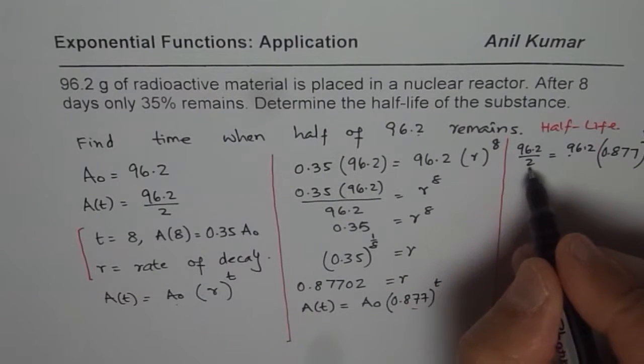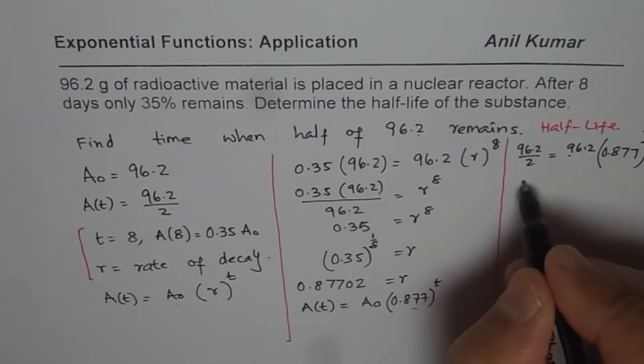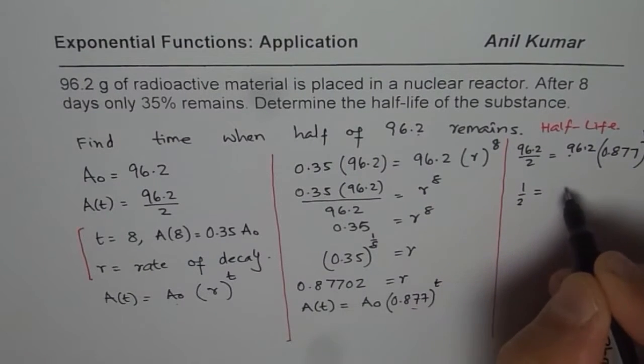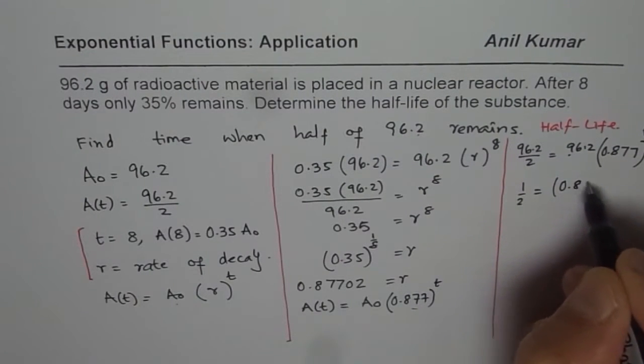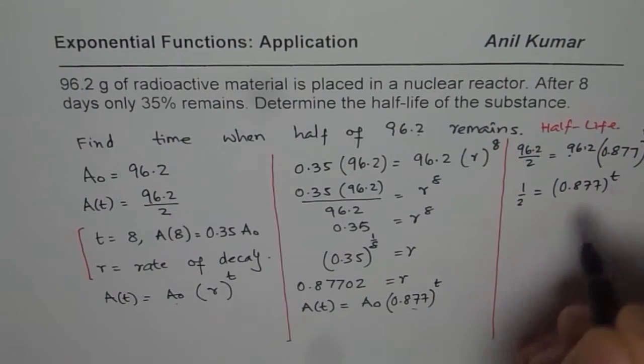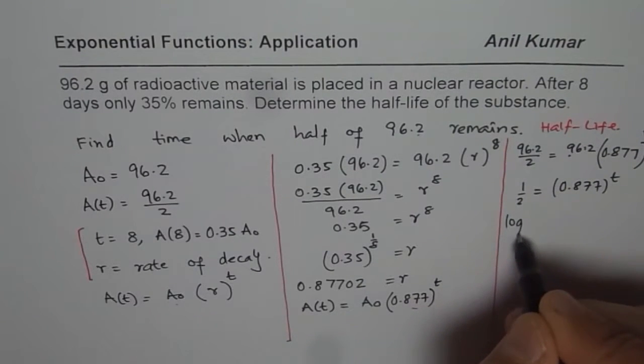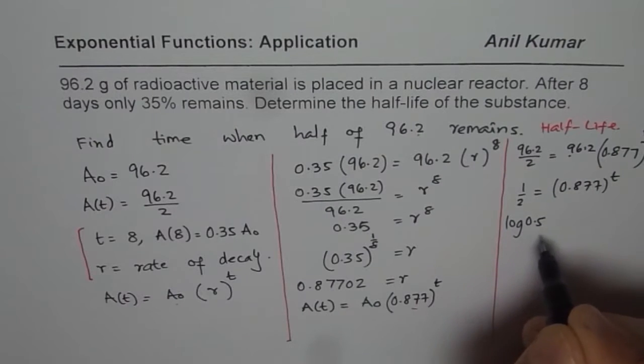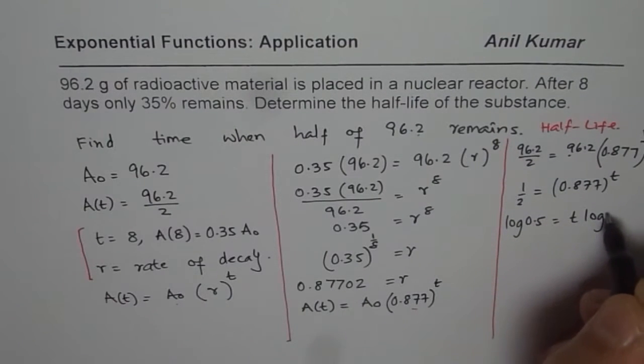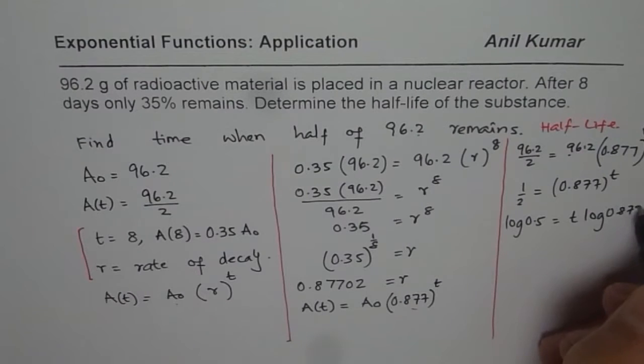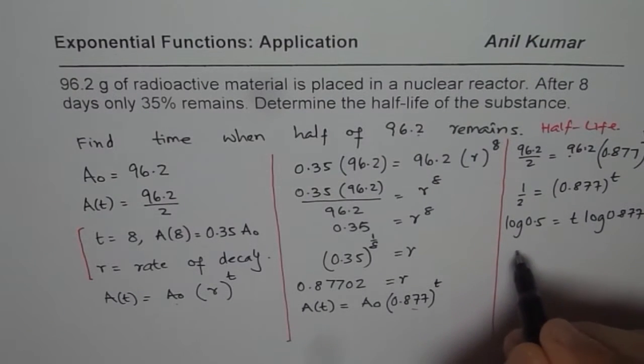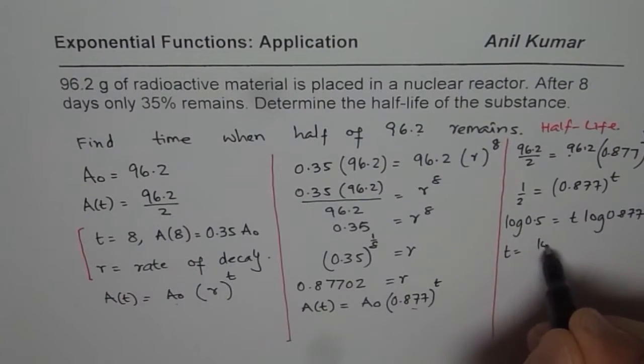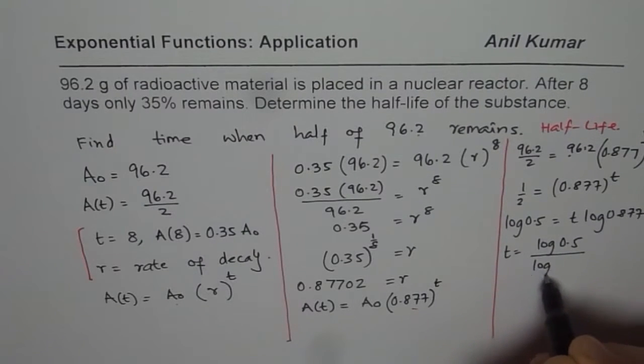So when you divide by 96.2, what do you get? You get half is equal to 0.877 to the power of t. Taking log, we will say log of half, which is 0.5, equals to t times log of 0.877. And from here, we can say t equals to log of 0.5 divided by log of 0.877.